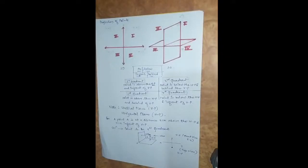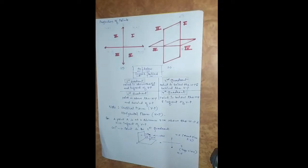Hello everyone. In the previous lecture, I gave you the introduction of orthographic projection about the two principal planes and how the projections are drawn onto the plane by using projectors — straight lines drawn from the given object. Here we will move towards our main topic, which is the second module about projection of points and lines. Before moving to the projection of lines, we will study the projection of points.